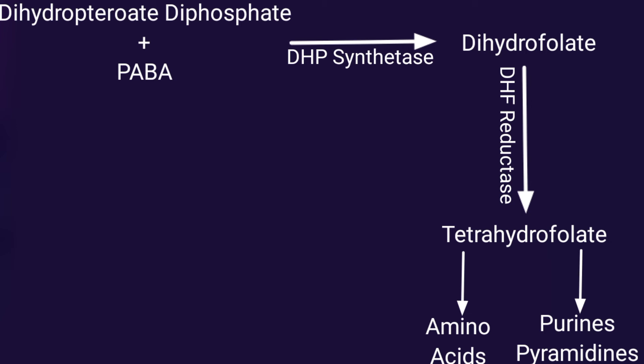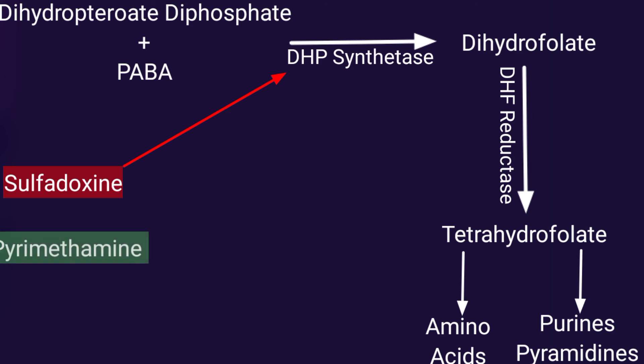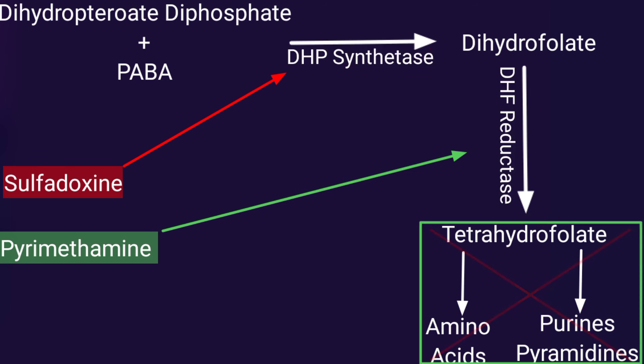This tetrahydrofolate is then converted into amino acids and purines or pyrimidines, which cause the growth and reproduction of the parasite, resulting in more and more parasites available to cause infection. So what is the action of Fansidar? Number one, sulfadoxine blocks the synthetase enzyme, blocking that pathway. Number two, pyrimethamine blocks the reductase enzyme, preventing formation of pyrimidines, purines, and amino acids.